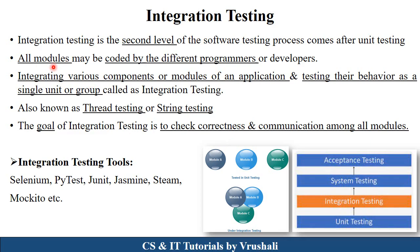In a particular project, there are different types of modules developed by different programmers or developers. In integration testing, the tester integrates all these components and modules into a single group and performs testing on the complete project or program. That is why it is also called thread testing or string testing. The main goal is to check correctness, accuracy, quality, and communication between all modules. Integration tools available include Selenium, PyTest, JUnit, and Jasmine, which testers use for generating different types of test cases.